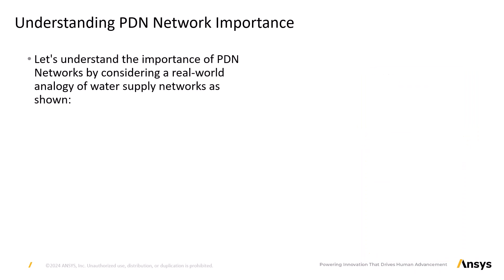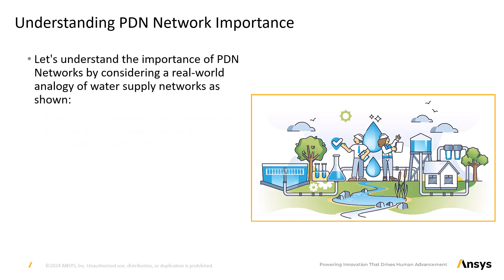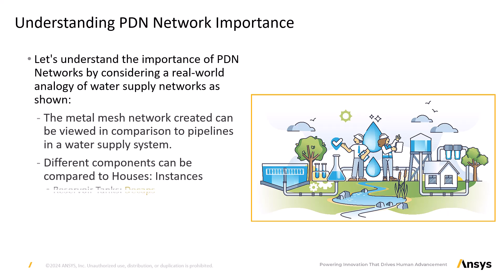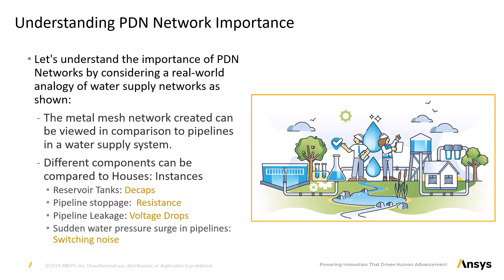Let's explore the fascinating world of PDN networks by making a comparison to a real-life analogy of water supply networks. Imagine a complex metal mesh network that resembles the pipelines of a water supply system. Individual houses are like small self-sufficient entities, and reservoir tanks act as decoupling capacitors — charged reservoirs. Just like pipeline blockages, high resistance in PDN networks can cause similar impedance. Pipeline leakage can be compared to voltage drops, and a sudden surge in water pressure can be seen as switching noise in PDN networks.